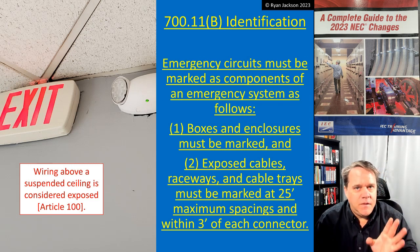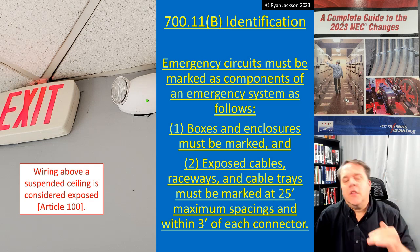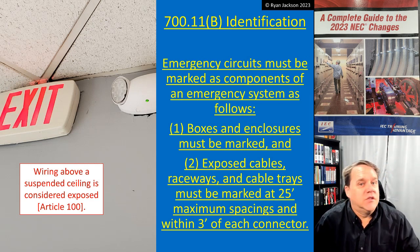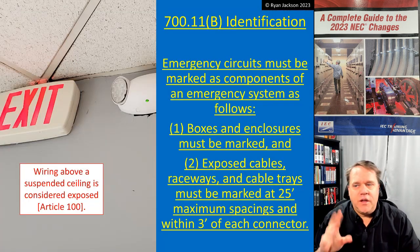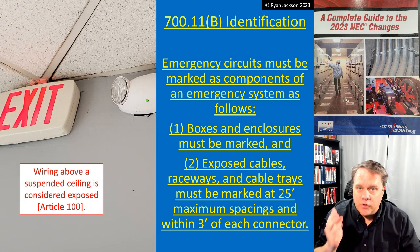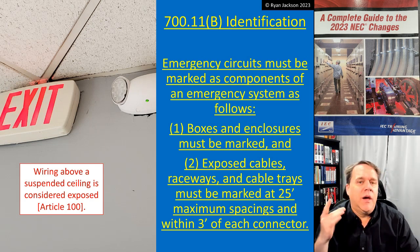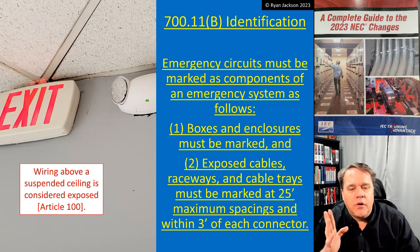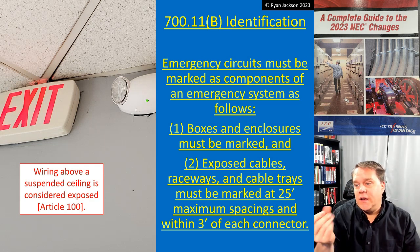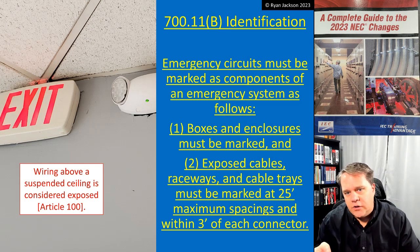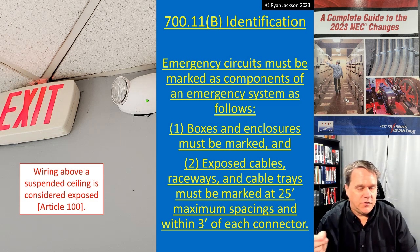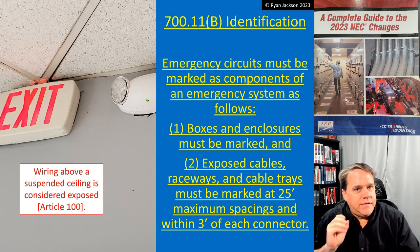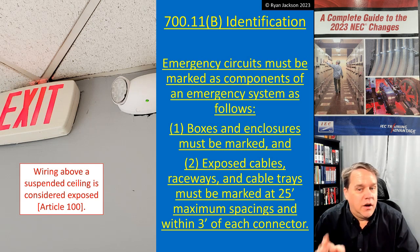I like to show a grid ceiling when talking about exposed wiring methods, because a lot of people don't realize that wiring above a suspended ceiling is not concealed — it's exposed. So when you read the rule that says wherever the cable is exposed you have to mark it, people might think it's above the ceiling and not exposed. But go to Article 100: exposed wiring methods — wiring behind access panels is considered exposed. We're talking about 25-foot maximum spacings on the cable, usually a Cat 6 cable, and within three feet of each connector — your typical RJ45, Cat 6 type of termination. So you need to mark the cable every 25 feet and within three feet of the RJ45 to indicate it's a component of an emergency system.